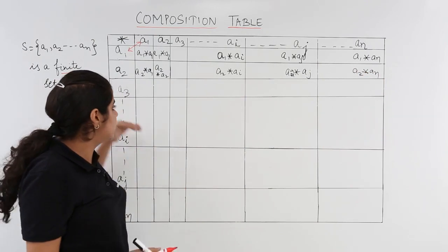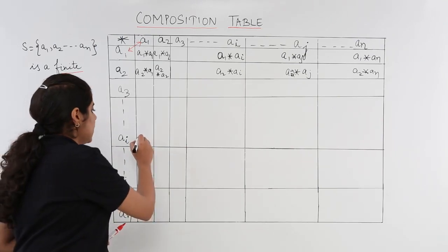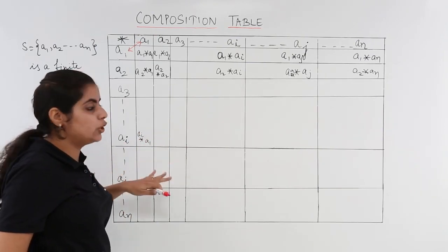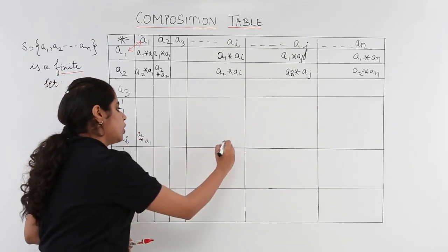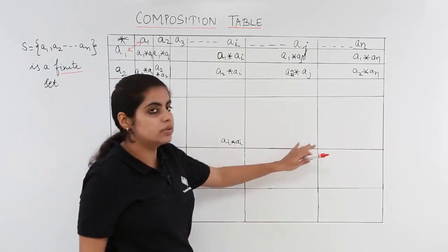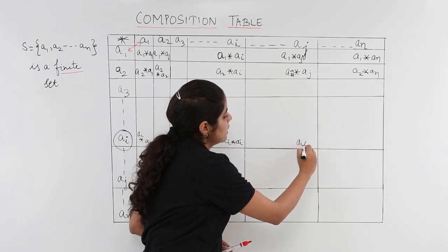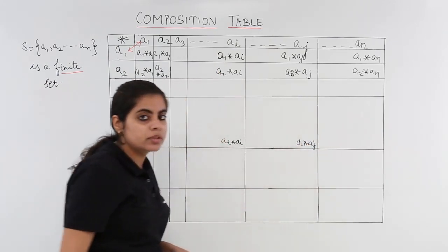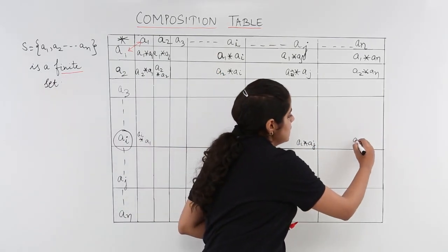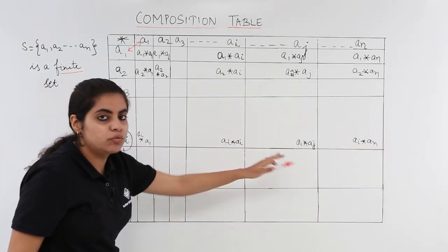What about ai? ai star a1, then ai star a2, and here we will have something called ai star ai. Then moving forward, this ai with the above aj will give me ai star aj, and last but not least again in the row of ai, I have ai star an. Similarly, the aj line would be filled.